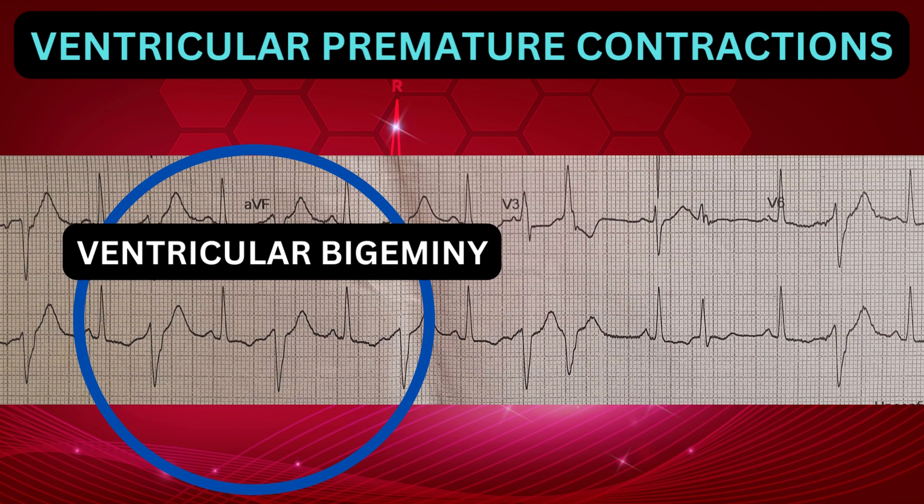Treatment for PVCs is usually not needed unless the patient is experiencing symptoms or has an underlying heart condition. Treatment options include lifestyle changes, medications like beta blockers and calcium channel blockers, and invasive procedures like catheter ablation.